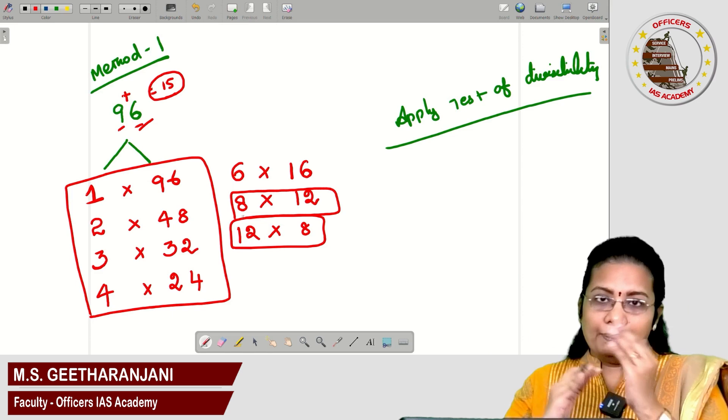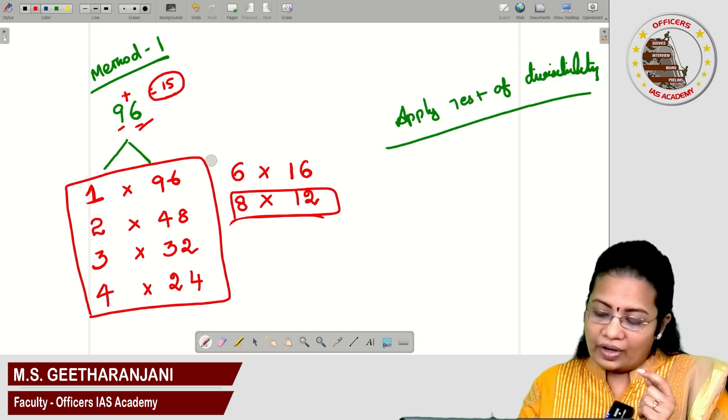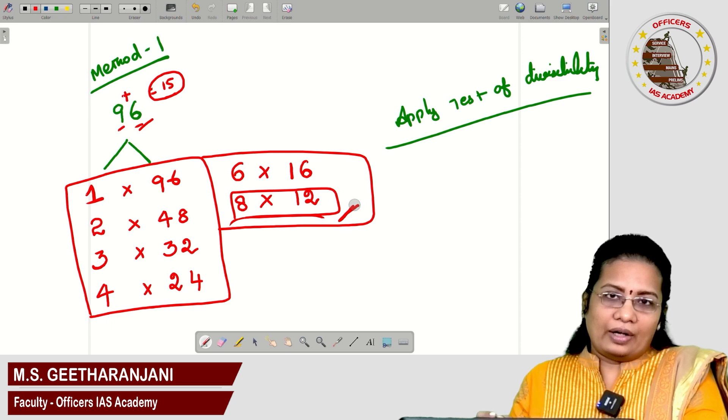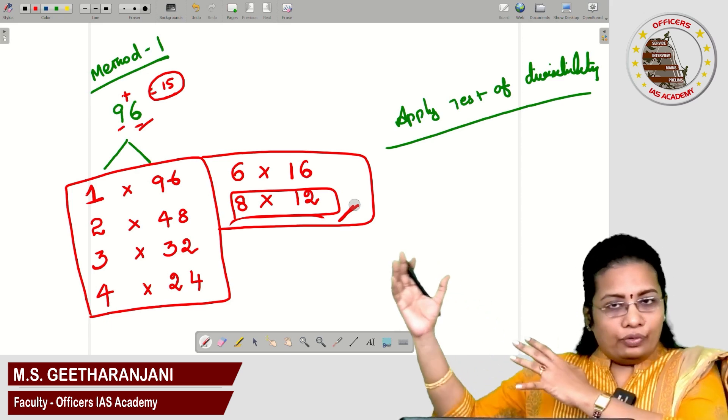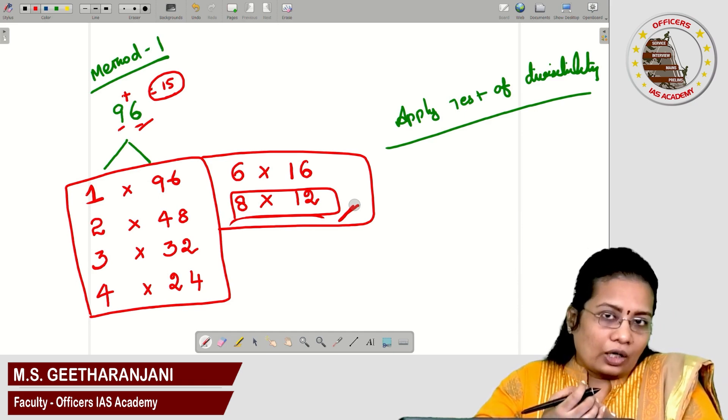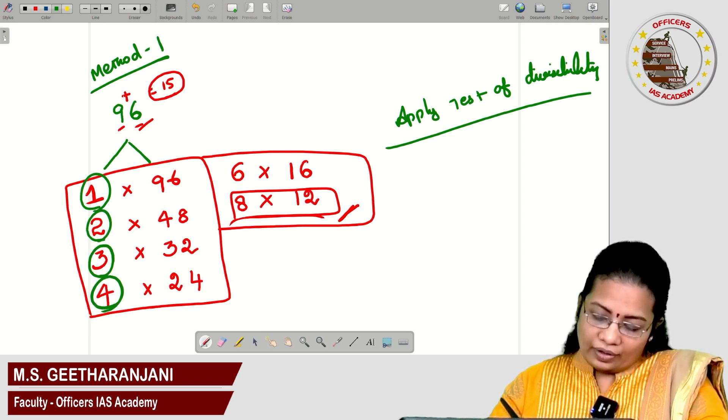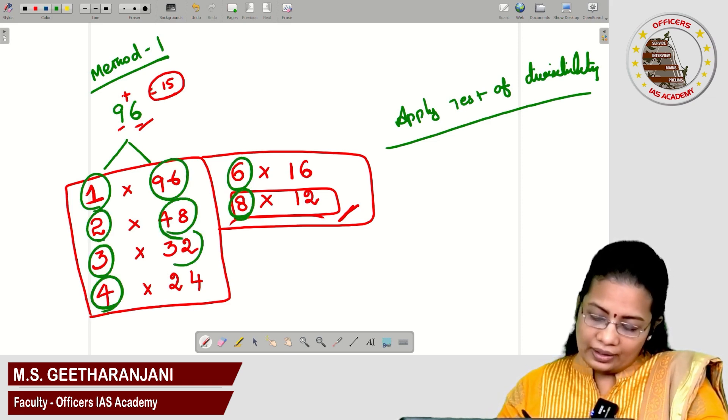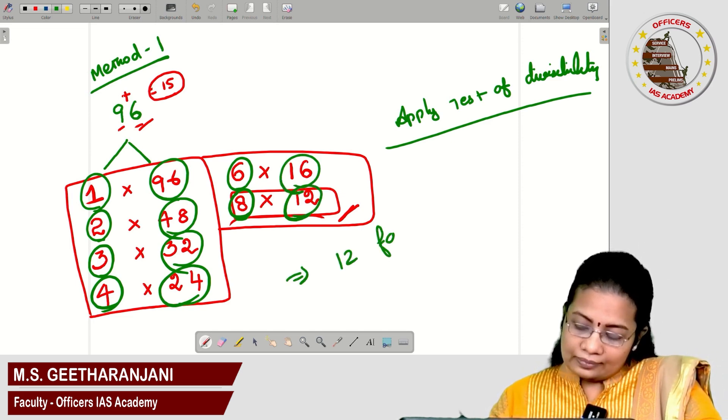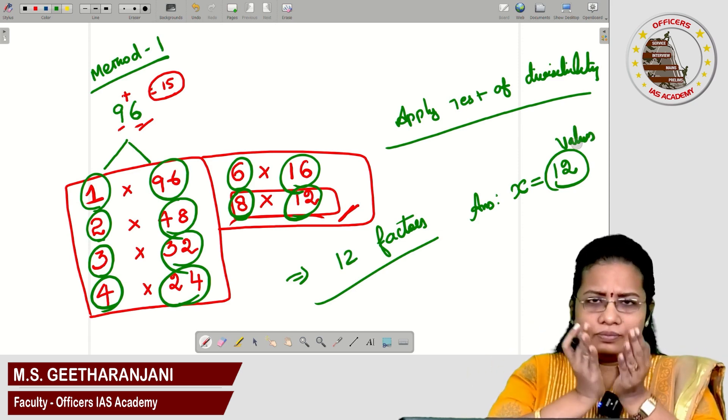Whenever you get the repeated values, 8 into 12 means 12 into 8 you are getting. You can stop the process of finding the extra factors because this is the ending point. Hereafter, if you find any factor that will be in the repeating mode, already it was taken into account. Just count the number of factors. 1, 2, 3, 4, 5, 6, 7, 8, 9, 10, 11, 12. Therefore, 12 different factors 96 have, there are 12 different values for x. Any of this value may be given to x.